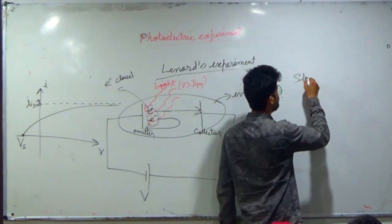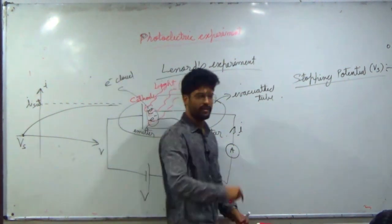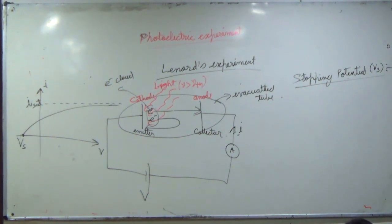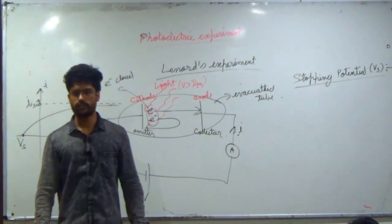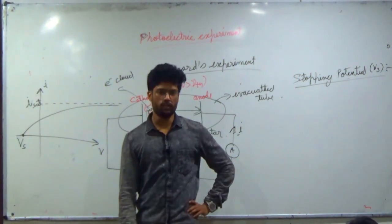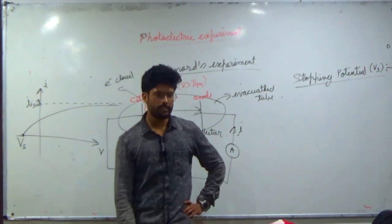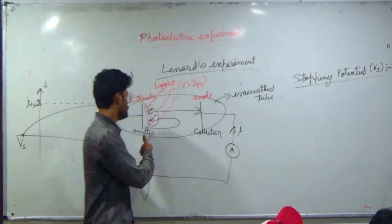Stopping potential is the negative potential of the anode with respect to cathode such that photoelectric current completely stops. It means all the emitted electrons are absorbed back by the emitter plate.